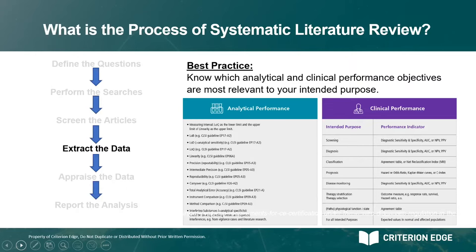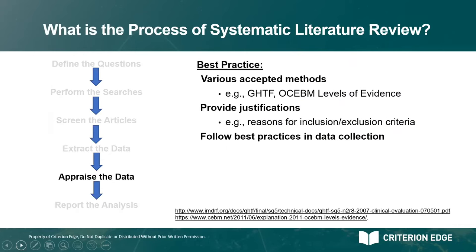Now that you have your data extracted, you're ready to appraise the overall quality of your data set. There are several accepted methods for appraisal — the most commonly used are the GHTF and the level of evidence. Be ready to provide justifications for the inclusion and exclusion criteria you've selected. For instance, if your device is very commonly reported, you can typically use a five-year time frame for your competitors. If your device is more rarely reported, you may need to extend that range to 10 years, with the caveat that more recent articles may better reflect the state of the art and there could have been changes in the standards used to assess those assays over 10 years. Be prepared to justify your choice of time frame and inclusion/exclusion criteria.